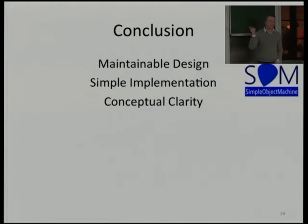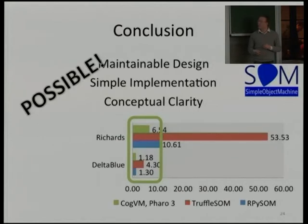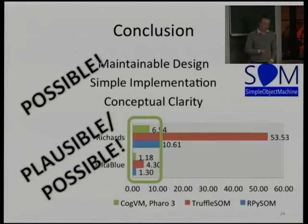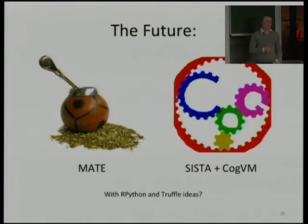As a conclusion, the question was: can we have maintainable design, simple implementations, and clarity, to reach more people actually maintaining interpreters? And I think yes, that's totally possible. The nice techniques have good contributors — that's a good foundation. When it comes to performance, I would say at least it's plausible, and I think it's possible with both approaches to reach that kind of performance. This is leading me to invest time to push these ideas into Marten and maybe the Cock virtual machine together with the Pharo people.